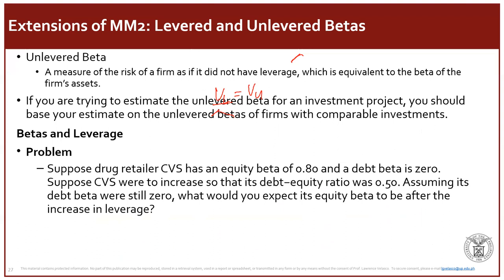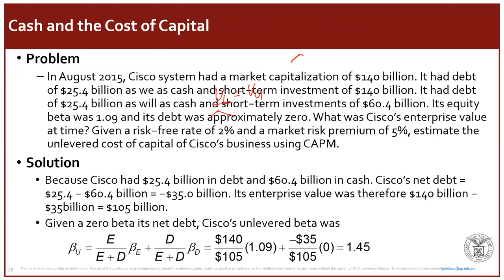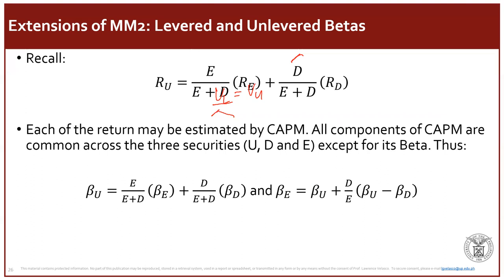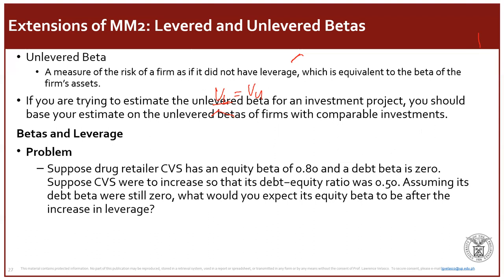Example: CVS has an equity beta of 0.8 and a debt beta of 0. If CVS increases leverage so its debt-to-equity ratio becomes 0.5, and debt beta remains 0, we apply the levered beta formula to find the new equity beta: β_E = β_U + (D/E) × (β_U - β_D). First we solve for β_U using the current capital structure, then apply the new D/E ratio of 0.5.